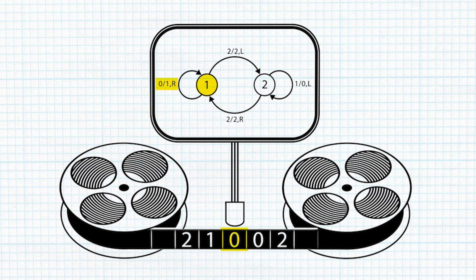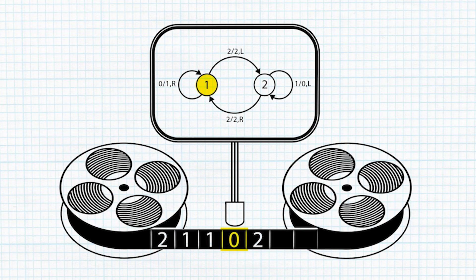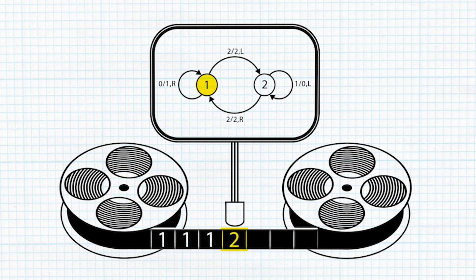Finally, follow this arrow — it loops around and comes right back to state one. So we stay in state one and the process repeats: read the symbol, do the if-then and write a new symbol, move the head, change the state.